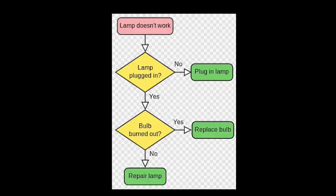Here we have a flowchart that shows how to check if the lamp works. First you see the pink box that says the lamp doesn't work. Then you follow the arrow to this rhombus that asks, is the lamp plugged in? You have two options: yes and no. If no, then plug in the lamp. If yes, check something else. Is the bulb burned out? If yes, replace the bulb. If no, you've got to repair the lamp.